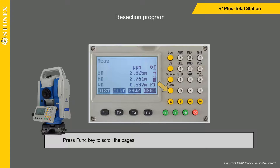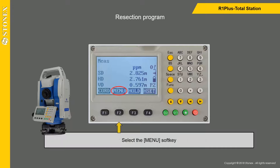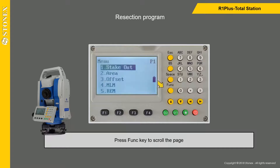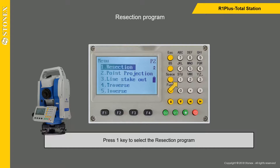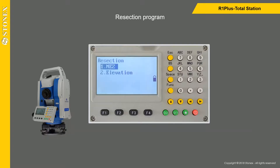Press the FUNC key to scroll the pages until the menu soft key appears on the screen. Select the menu soft key and press FUNC again to scroll the page. Press the 1 key to select the resection program. It is possible to perform coordinates or elevation resection; the procedure is the same for both cases.